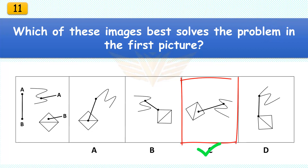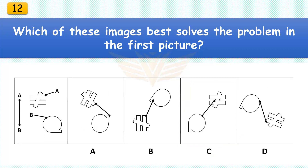Which of these images best solves the problem in the first picture? The correct answer is C. Rotate the M 135 degrees and rotate the cut diamond 45 degrees.